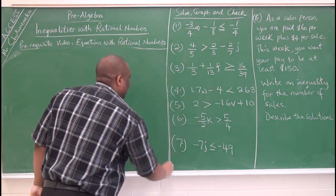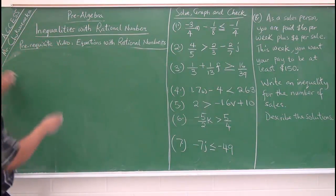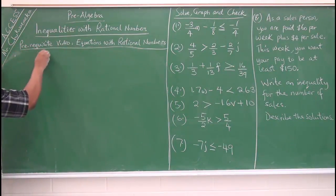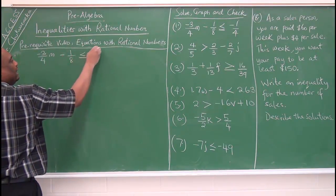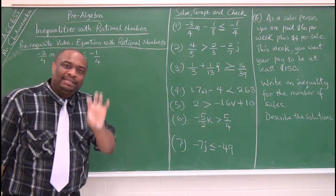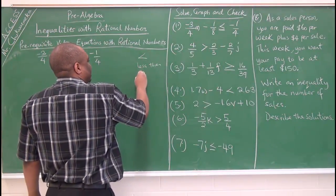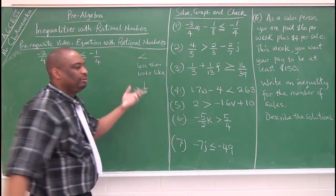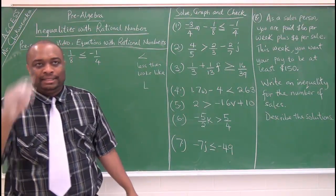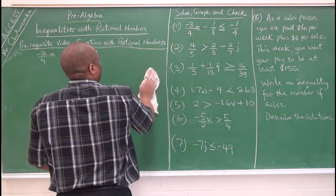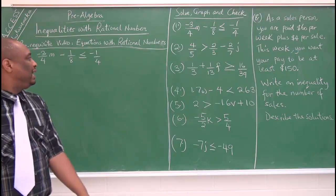Number one: inequalities with rational numbers by clearing fractions. We have negative 3m over 4 minus 1 over 8 is less than or equal to negative 1 over 4. Remember, the less than sign looks like the letter L — that helps you tell it apart from greater than. Just like we said in the prerequisite video, the same steps used for equations with rational numbers apply here.